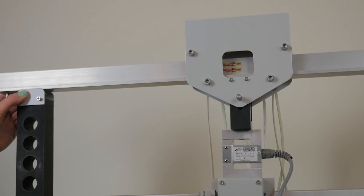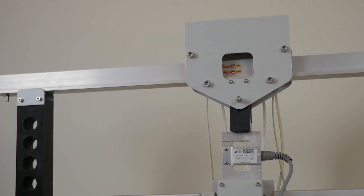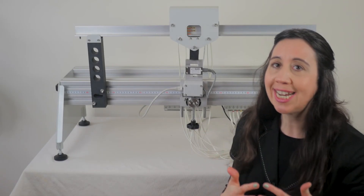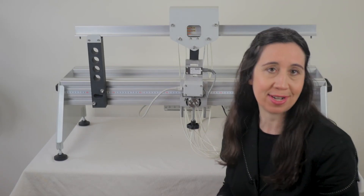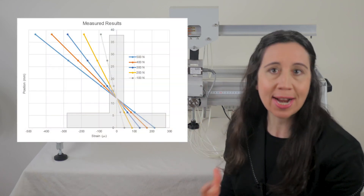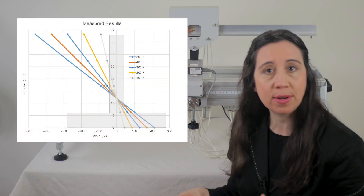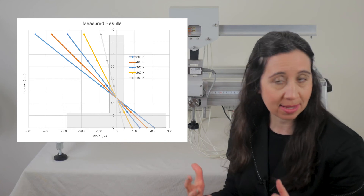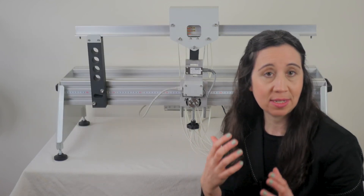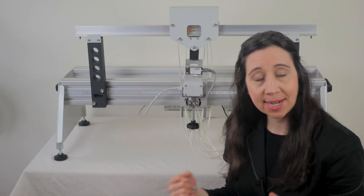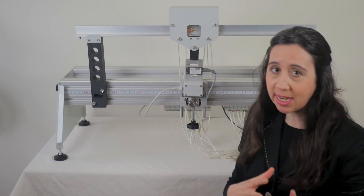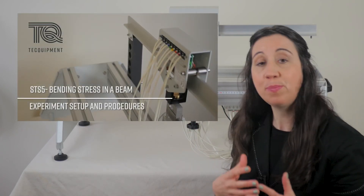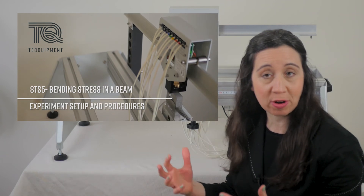The experiment takes you through applying loads at 100 newton increments up to 500 newtons, recording the strain readings at each increase in load. You're then ready to chart the strain against the load and add the results of each strain gauge either manually or within the VIDAS software. Then comes the analysis. A more detailed video is available to show how to set up and the procedure to follow for the experiment.